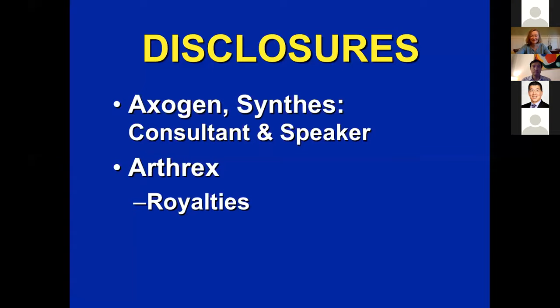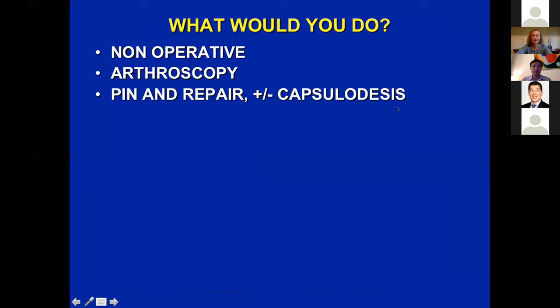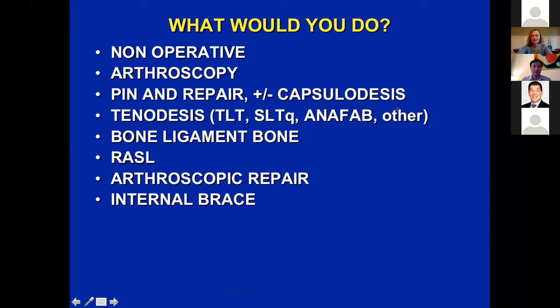My charge is to talk about scapholunate instability in 10 minutes. Let's start with a case: a 40-year-old man with a one-week-old injury who's symptomatic. What would you do? Options include non-operative, scope, pin repair capsulodesis, tenodesis, bone-ligament-bone, RASL, arthroscopic repair, internal brace, denervation, or nothing until a salvage procedure is needed.